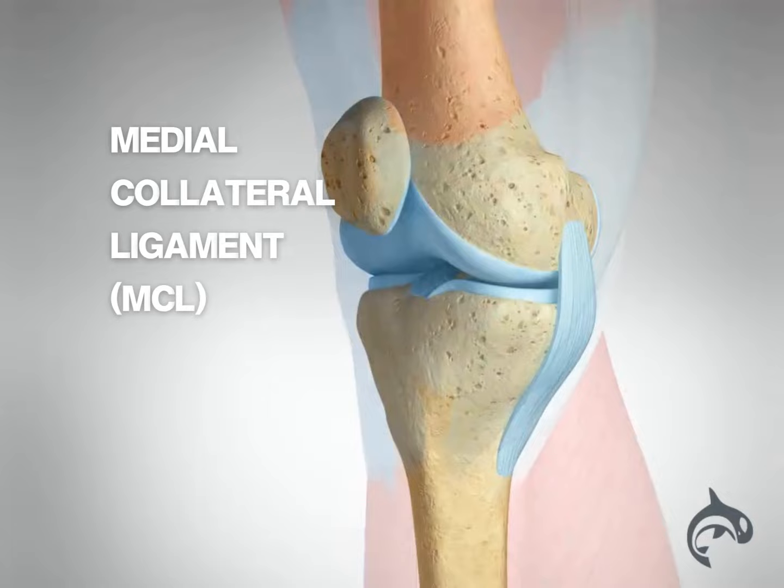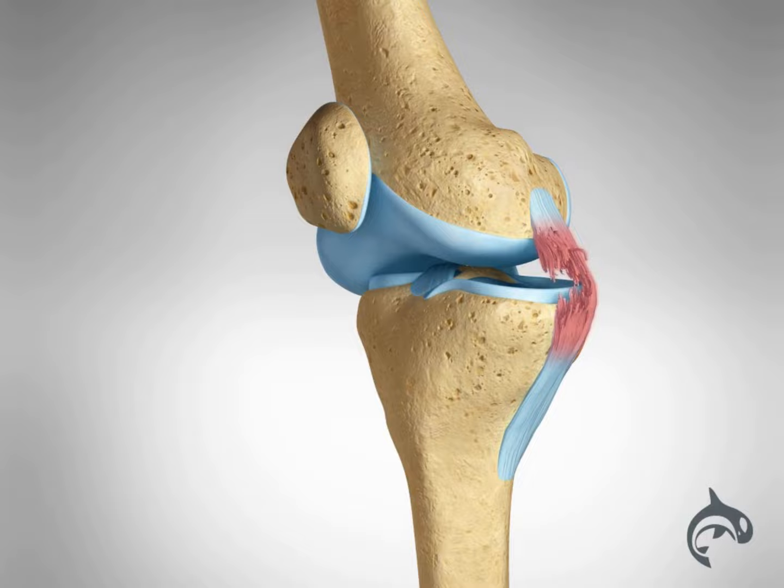The medial collateral ligament, or MCL, runs along the inside of the knee and helps to stabilize the joint. An MCL tear is often caused by a blow to the outside of the knee, and it can cause significant pain and discomfort.